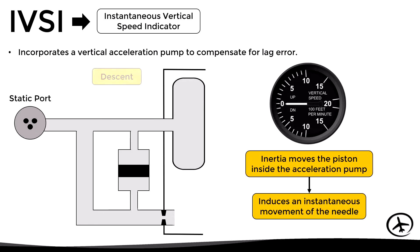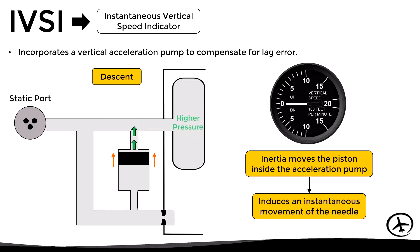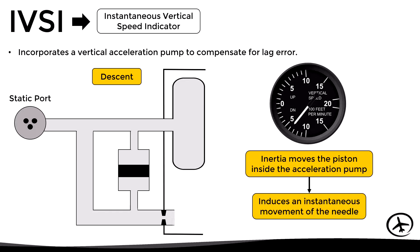In case of a sudden descent, the inertia will cause the piston to move upwards in the acceleration pump. This causes a rapid increase in pressure inside the capsule, which has the effect of an instantaneous descent rate indication. Again, the springs will return the piston to the neutral position and the instrument will continue to work normally.